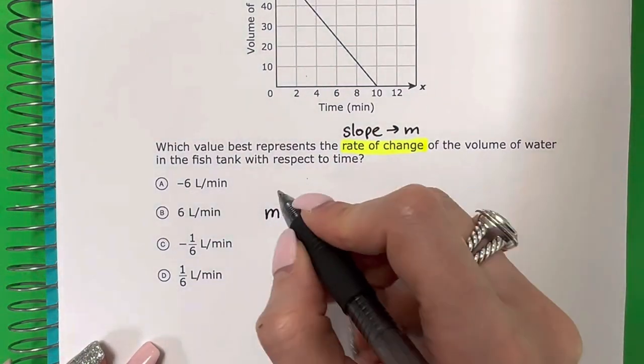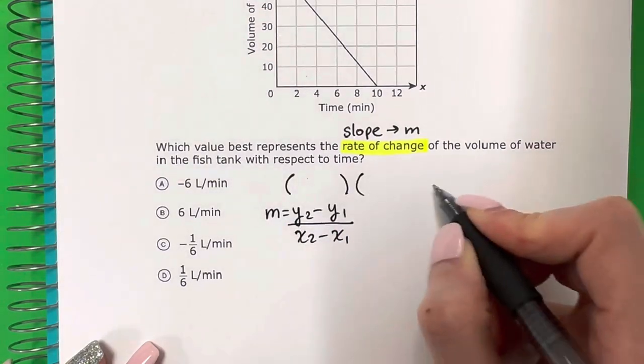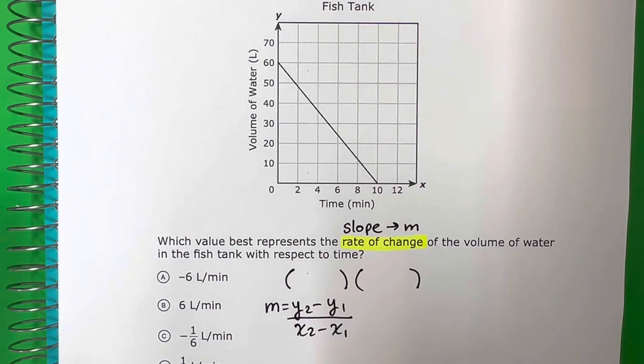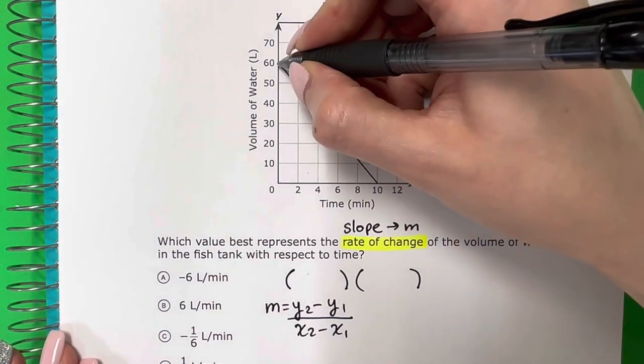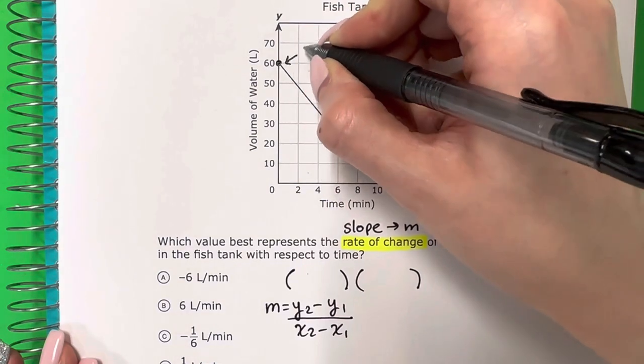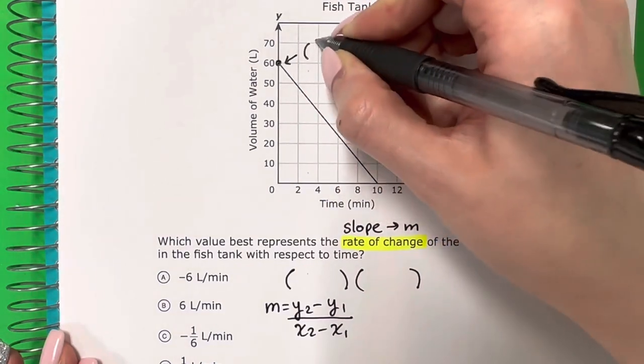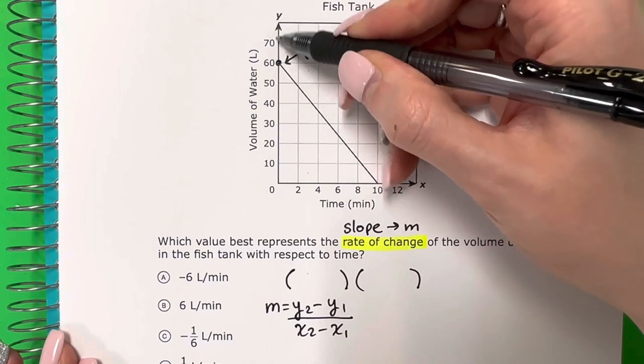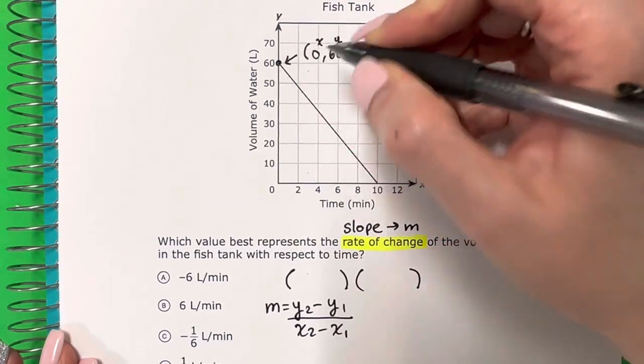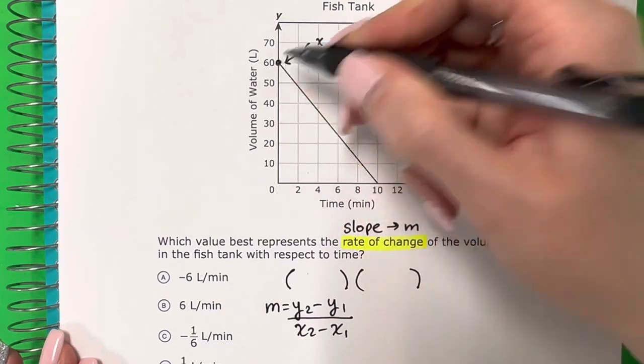Now to use this formula I need two ordered pairs. So let's pick two ordered pairs. I'm going to make it easy on myself. I'm going to pick the Y intercept which is 60. Let's write an ordered pair for that. X, Y looks like 60 is on the Y line and it's touching the line. So it's 0, right? X is 0, Y is 60.